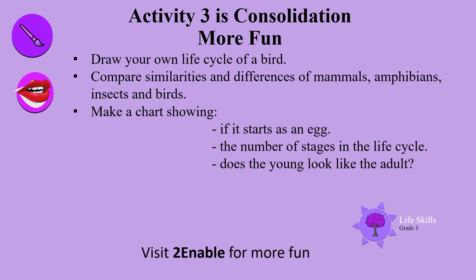Please, in activity 3, consolidate all you know — that means revise all your life cycles. Here is more fun: you can draw your own life cycle of a bird. Then compare similarities and differences of mammals, amphibians, insects and birds. Make a chart showing if it starts as an egg, the number of stages in the life cycle, and whether the young looks like the adult.